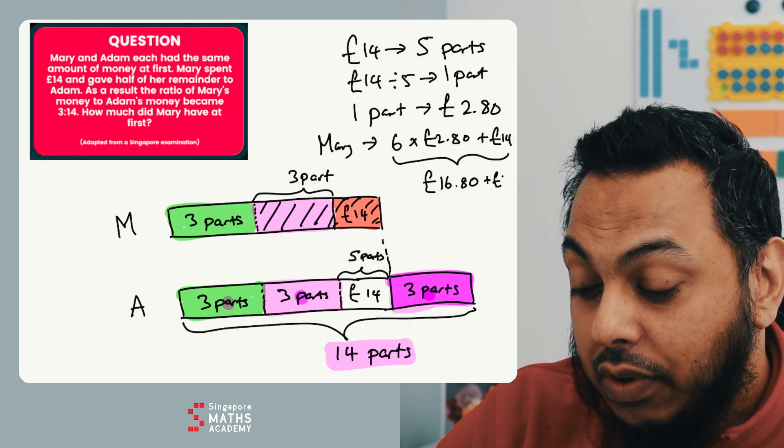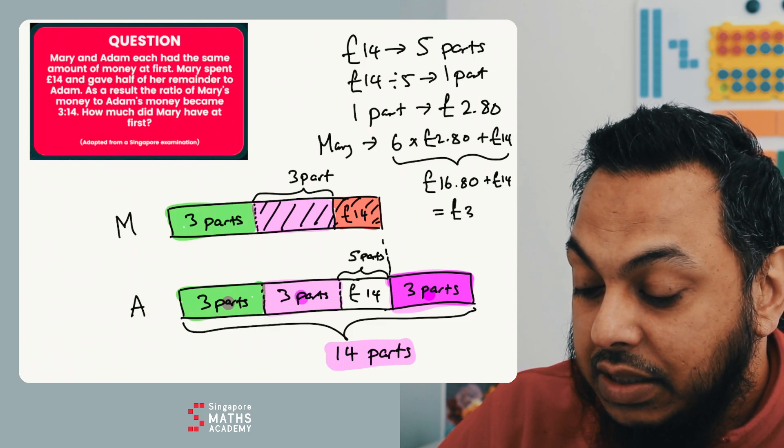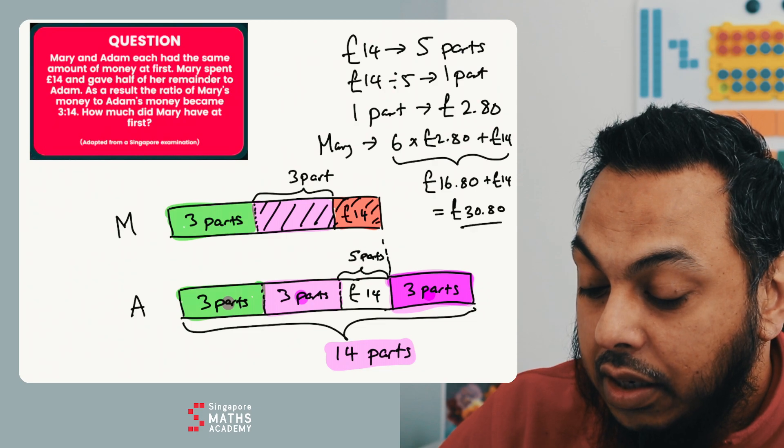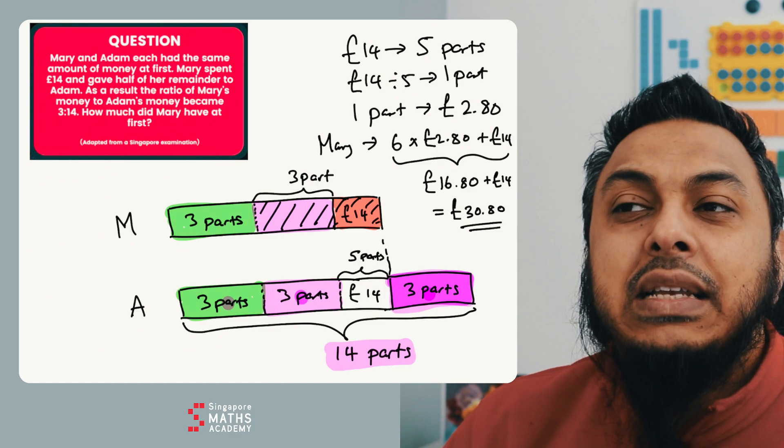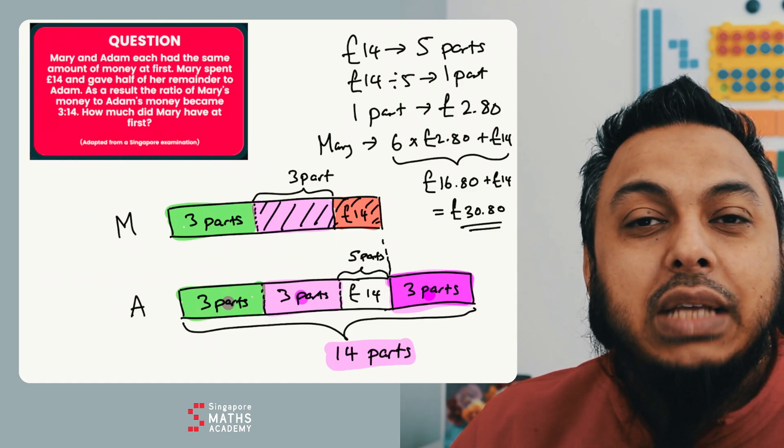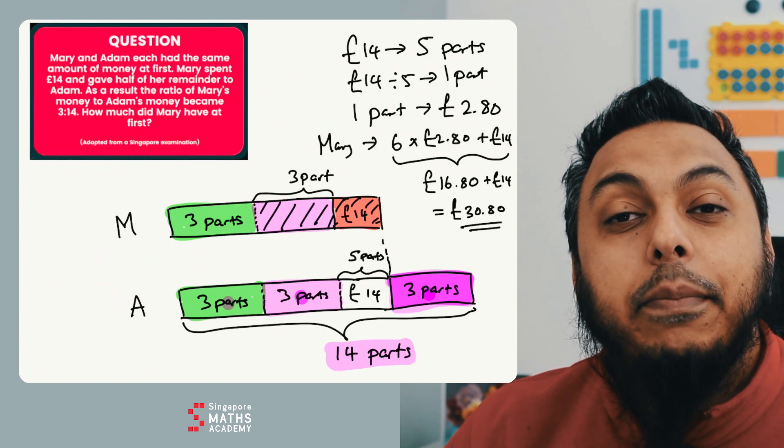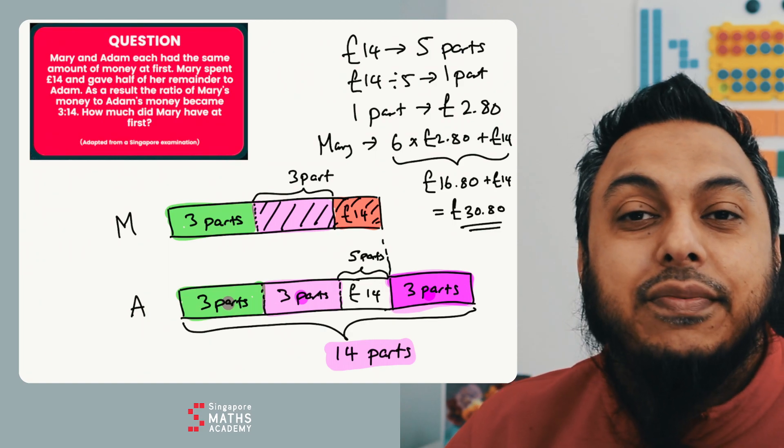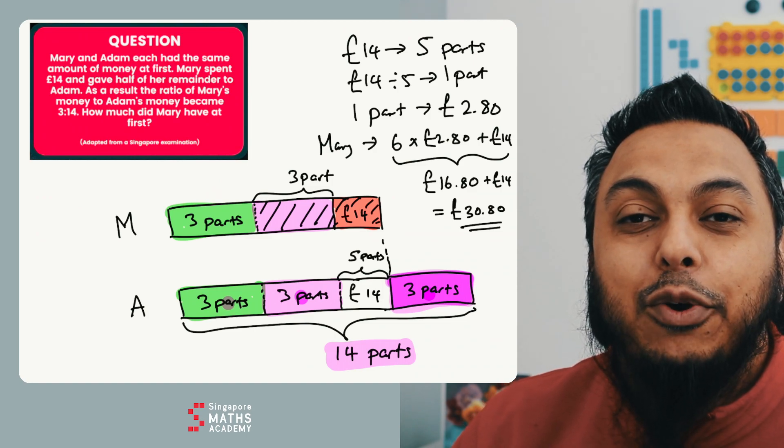Mary had £30.80 at first. Did that make sense? Tell us how you felt the bar models helped you, or if it didn't help you, let us know what method you'd have used for this question. Let me know how it goes in the comments below. Take care everyone, see you next video, bye.